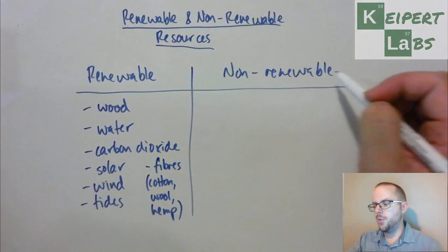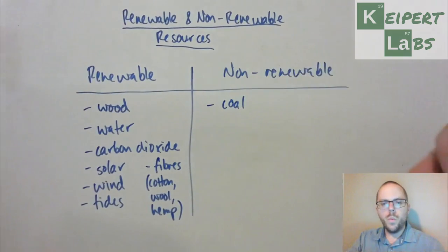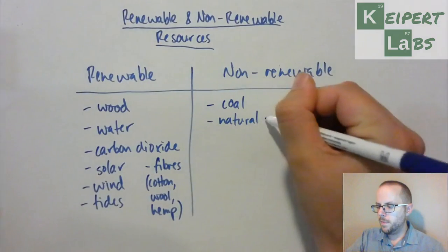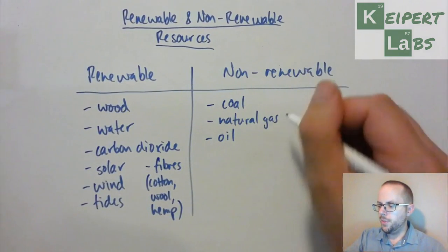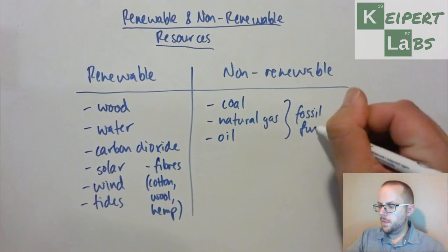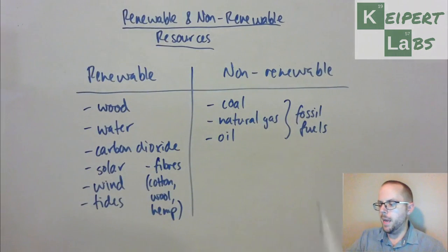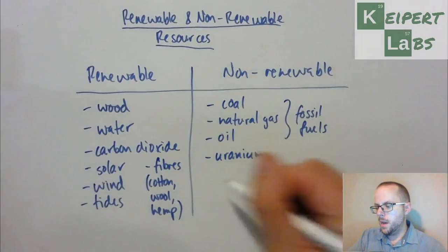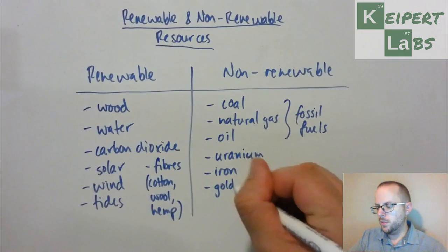Thinking about things that are non-renewable: some big ones like coal, natural gas, oil — they're all things that we would call fossil fuels. We'll go through that in more detail in a future video as far as why we give them that name. We're also talking about things like uranium, or other metals like iron, gold, silver, and so on — maybe iron or copper, or other metals that we use for all sorts of different things.